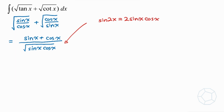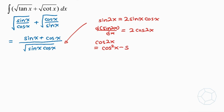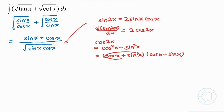Next, recognize that the denominator is actually the double angle formula: sine 2x equals two sine x times cosine x. If we differentiate sine 2x dx, we get two times cosine 2x. Moreover, the formula for cosine 2x equals cosine squared x minus sine squared x, which can be factorized as (cosine x plus sine x)(cosine x minus sine x). We can see that the first term is actually the numerator of the integrand.